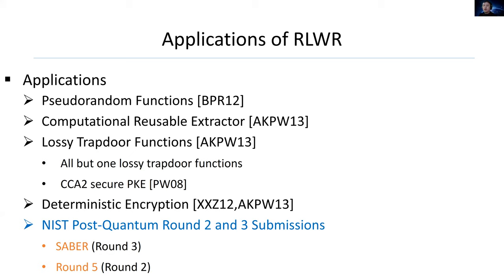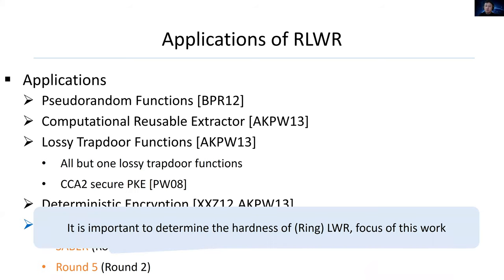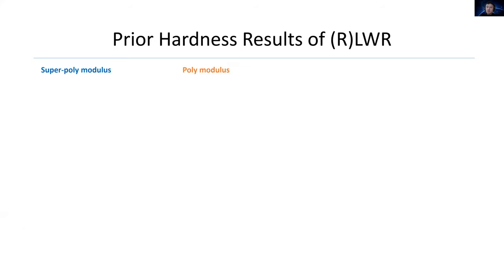We also construct very simple deterministic encryption by ring LWR. Interestingly, there are two submissions, the SABER in Round 3 and Round5 in Round 2, based on ring LWR among the post-quantum Round 2 and Round 3 submissions. Given many useful applications above, it is important to determine the hardness of ring LWR, and it is also the focus of this work.